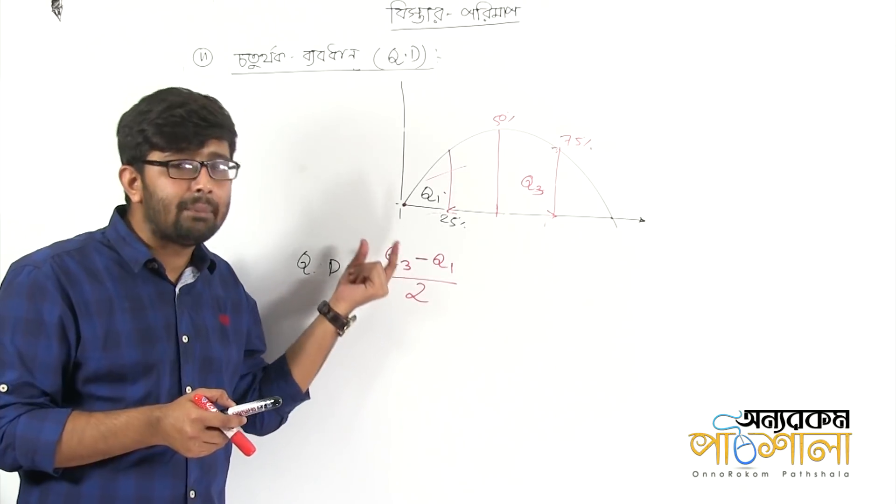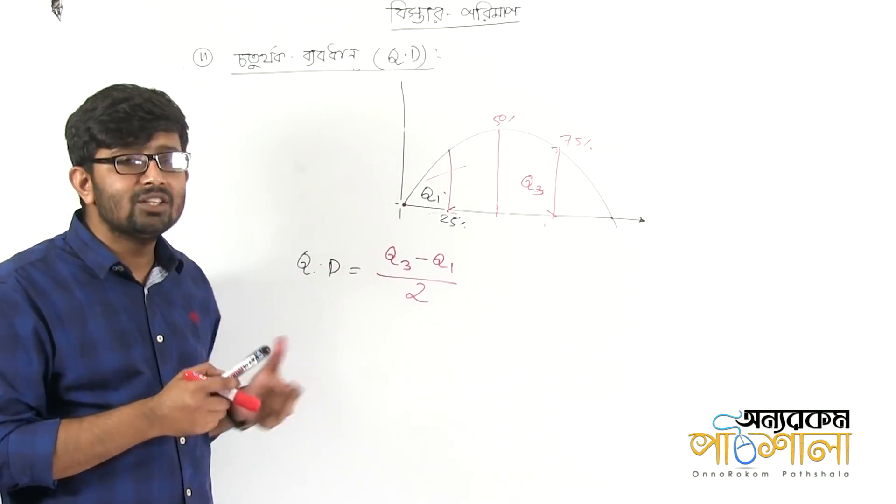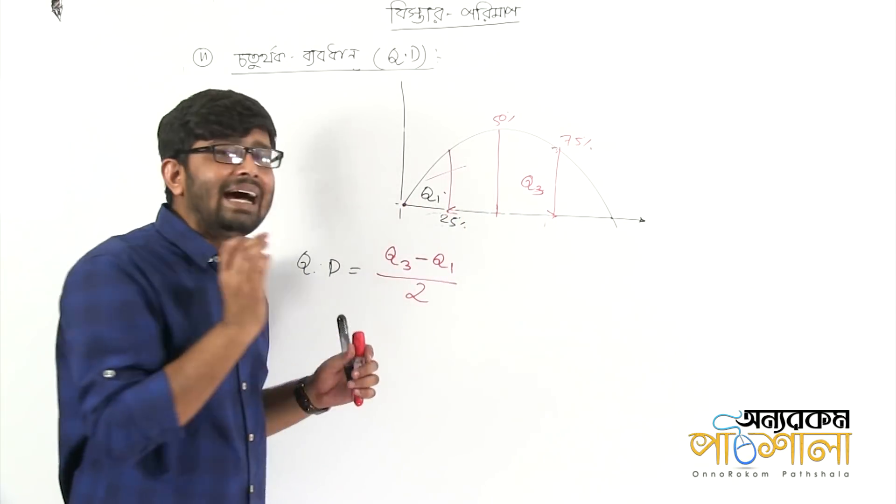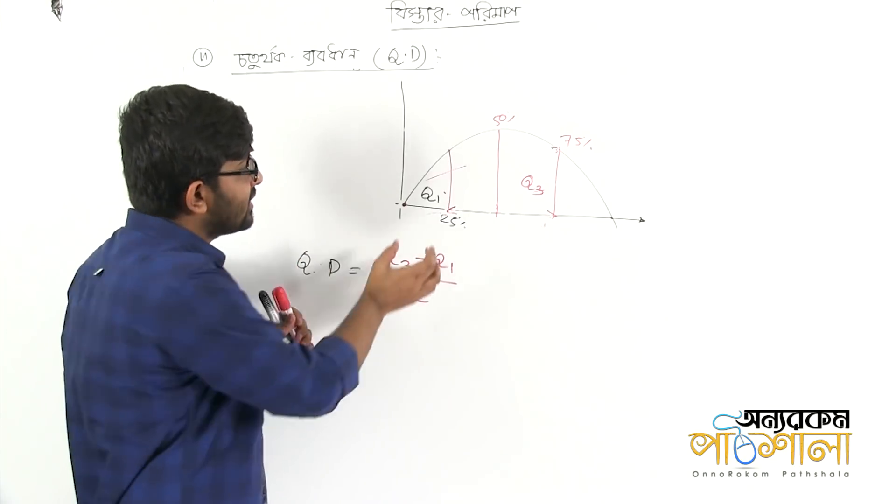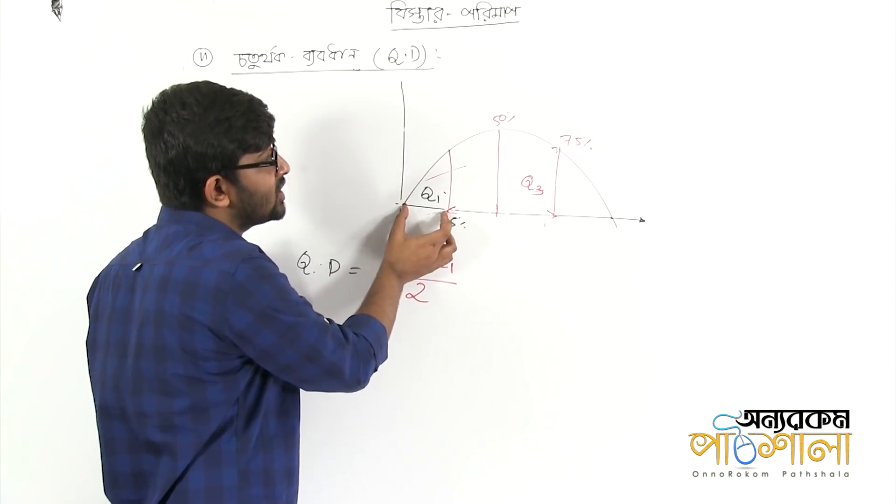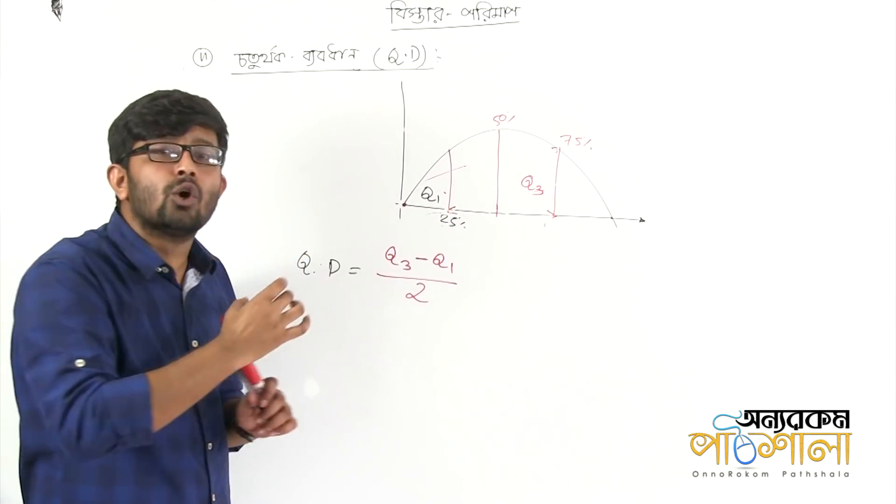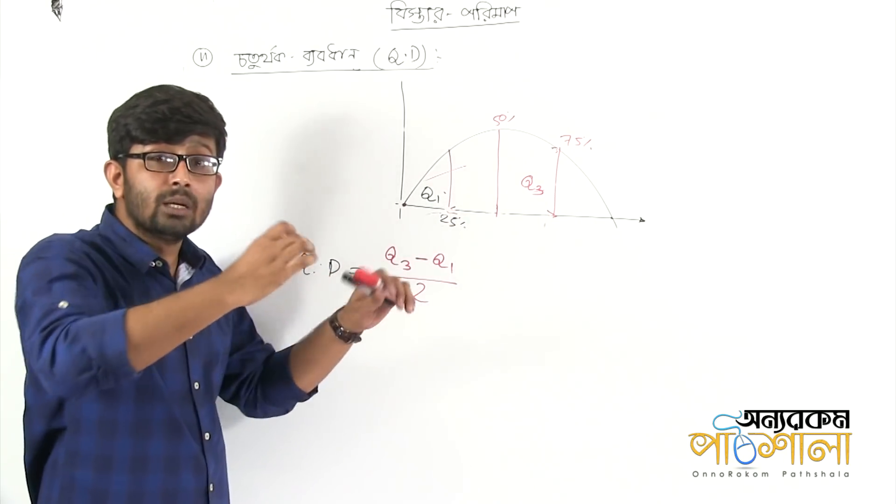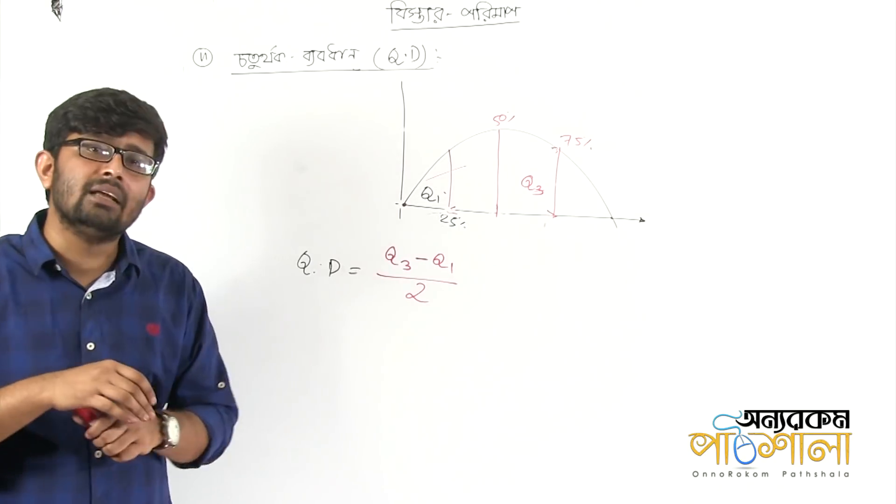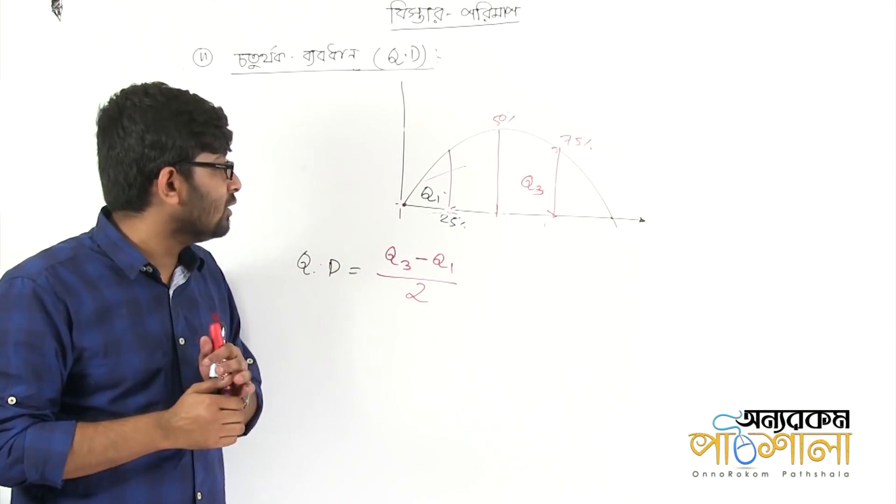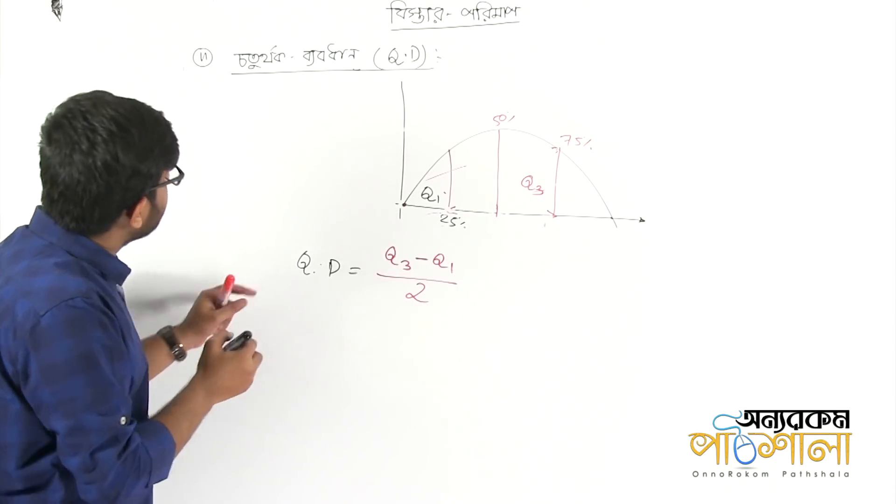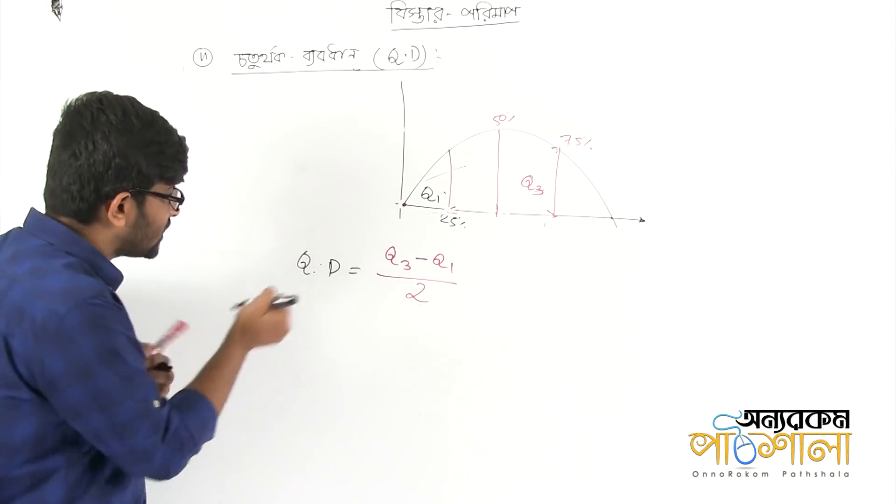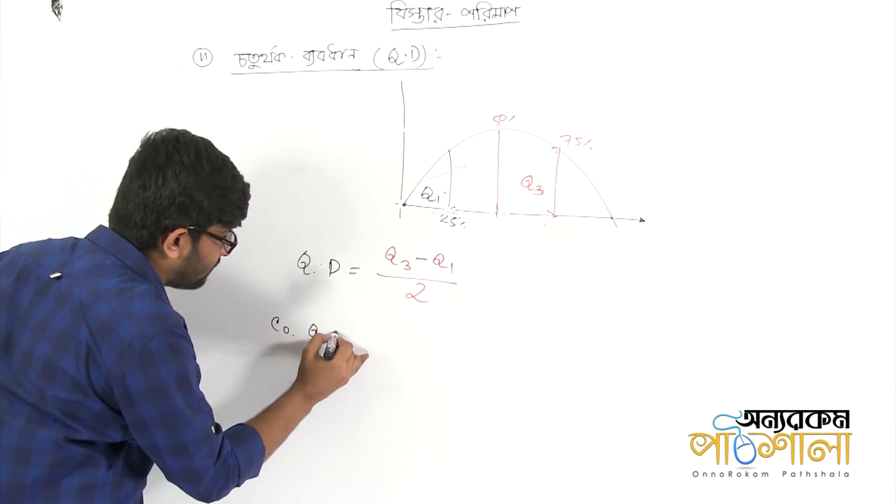That is the difference between the two. The deviation is the quartile deviation. The difference between 25% and 75% can be divided. The equation is Q3 minus Q1 divided by 2. This is the absolute measure of dispersion. We should also consider a relative measure of dispersion. This is the coefficient of quartile deviation.